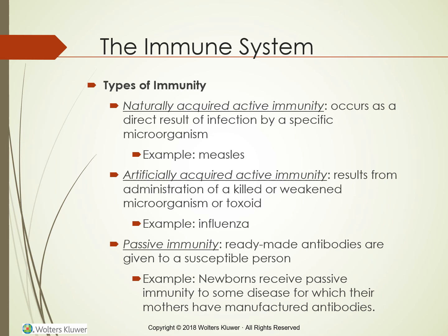The three types of immunity are naturally acquired active immunity, artificially acquired active immunity, and passive immunity. Both forms of active immunity require the person's own production of plasma and memory cells. Passive immunity occurs when man-made antibodies are provided.